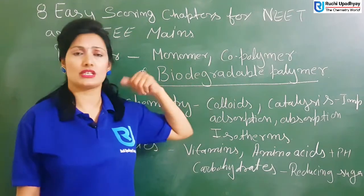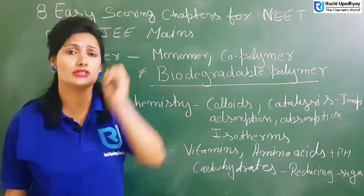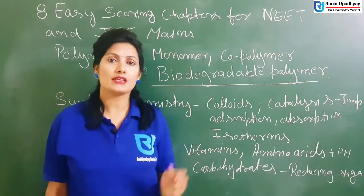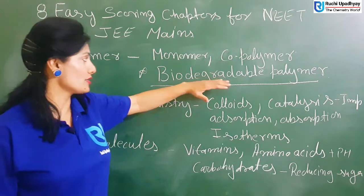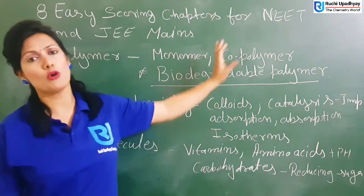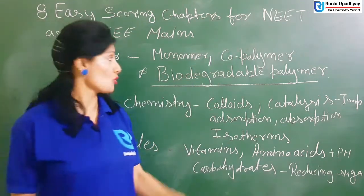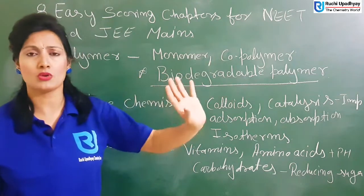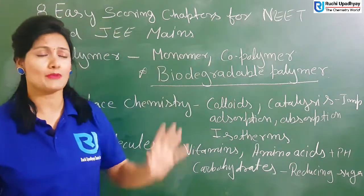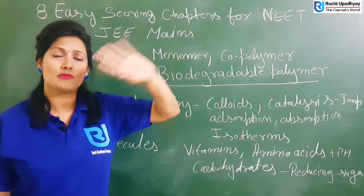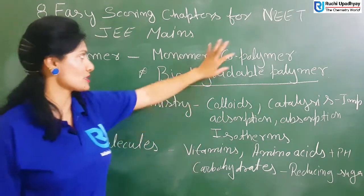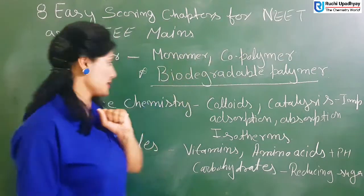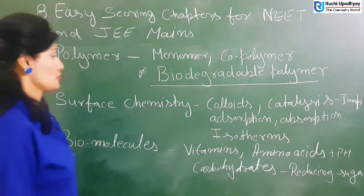The most important topic is biodegradable polymer — you will need to study it, and your examples are very good because a lot of questions are asked on it. I have seen papers from the last 10 years, and I have understood that there will be a lot of questions on biodegradable and co-polymer. So if you have to study polymers, you have to cover these three things. You don't need to study the mechanism — just co-polymer, biodegradable polymer, and monomer.